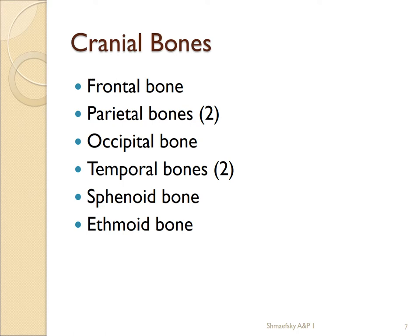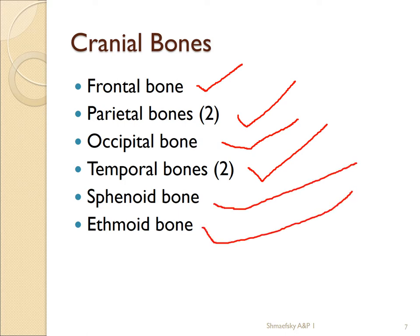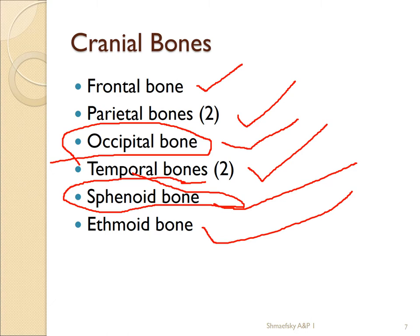For the cranial bones — and this would be on a test — you need to know: the frontal bone, the two parietal bones, the occipital bone, the two temporal bones, the sphenoid bone, and the ethmoid bone. These all form a protective covering around the brain and the cranial vault. The sphenoid holds the vault together, and the occipital acts as the attachment point between the cranium and the rest of the body.